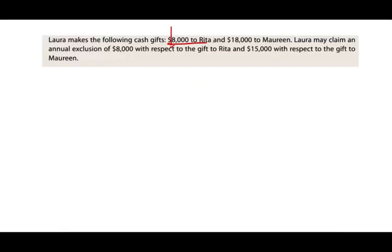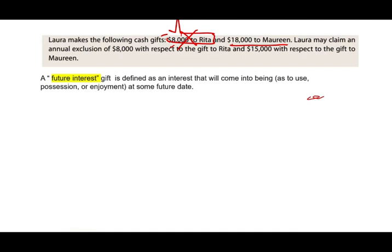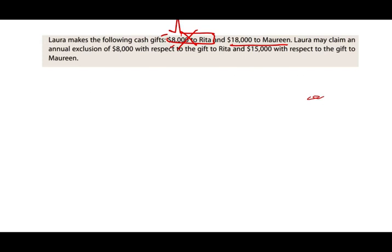Let's take a look at a few examples. Laura makes the following cash gifts: she gave $8,000 to Rita — no problem whatsoever, $8,000 is less than $15,000. And $18,000 to Maureen. Of that $18,000, $15,000 is excluded by the annual exclusion. So the first $15,000 I don't have to worry about. What's left is $3,000. That $3,000 I have to consider for gift tax — but really you're going to see that $3,000 won't have tax consequences unless my gifts over the years exceed a certain amount, which is in the millions of dollars.